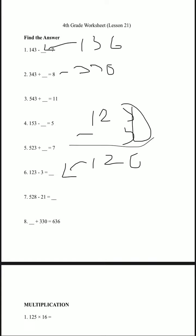And lastly, let's do number 7. 528 minus 21. 8 minus 1 is 7, and 2 minus 2 is 0, and 5 minus 0 is 5. So 507 is the answer for number 7.